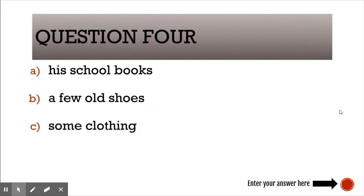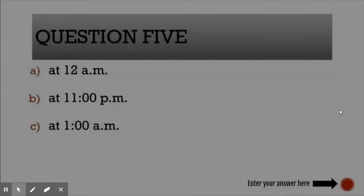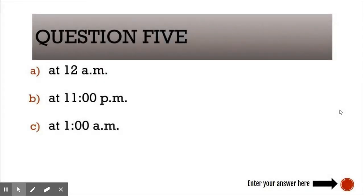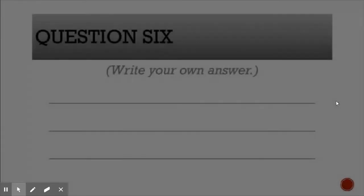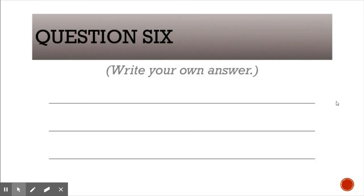Let's continue. We are now doing question number four: What does the man have under his bed? Ready for question five? Here we go. Question five: What time does the man go to bed? Just want to remind you to enter your answers right on this section. And here we have our last question, question number six: What do you usually eat for dinner?